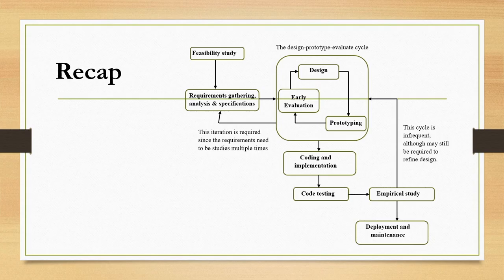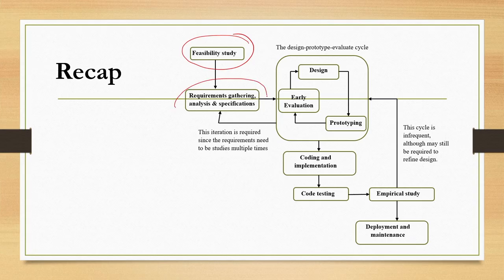One such interactive system development life cycle, which comprises several stages, is what we are currently discussing. The stages include: first, the feasibility study stage, which we have not covered in detail in this course. Next is the requirement gathering, analysis, and specification stage. In a typical software development life cycle this stage is present, but in the interactive system development life cycle it adds requirements for usability — we need to gather requirements for both the software system and from a usability point of view.